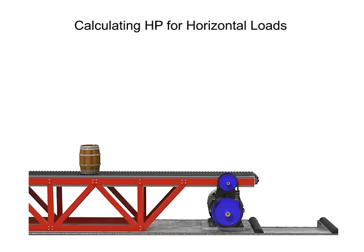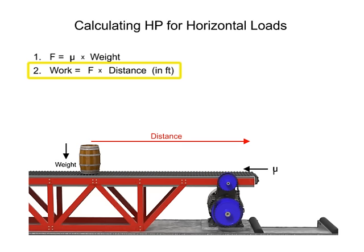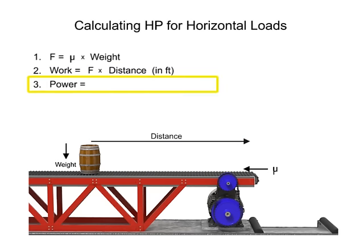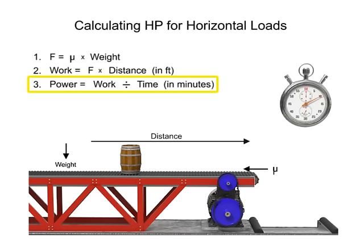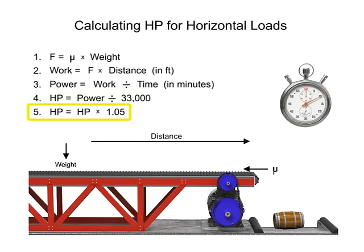Once this force is determined, it's easy to calculate the required horsepower to move a horizontal load. First, find the horizontal force required by multiplying the coefficient of friction by the weight. Then, determine the amount of work required by multiplying the force by the distance in feet to be moved. Next, calculate the power by dividing the work by the time in minutes. Then, convert to horsepower by dividing the result by 33,000. Finally, add 5% to compensate for estimated friction losses in the motor or cylinder.